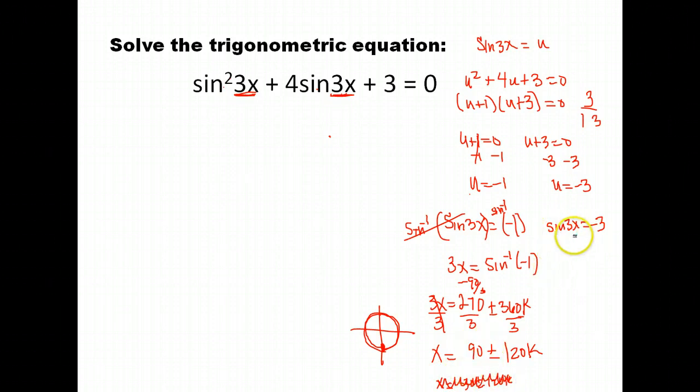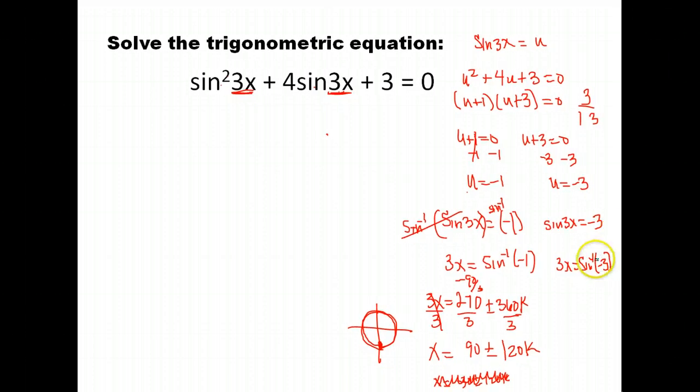We still have this one to solve for over here. So, we do the inverse sine of both sides, and I get 3x is the inverse sine of negative 3. Unfortunately, or actually fortunately, sine can't be greater than 1 or less than negative 1. If you try to do the inverse sine of negative 3 in your calculator, you will get an error, because it's undefined there. So, we don't get any answers from this one.